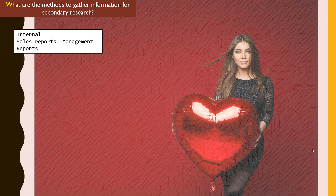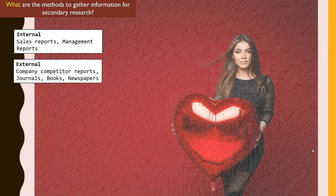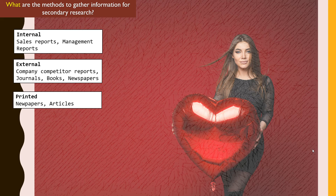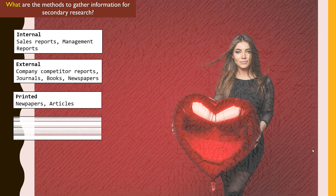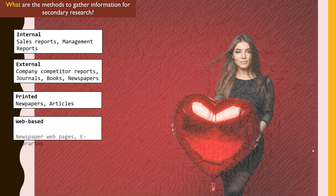Sources also include external sources such as competitor reports, journals, and textbooks. We can also look at printed materials — hard copy information like newspaper articles. Additionally, we can look at web-based materials, such as information from the internet through e-libraries and web pages.